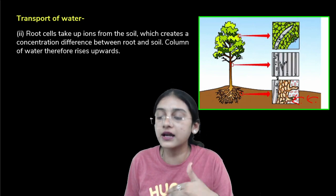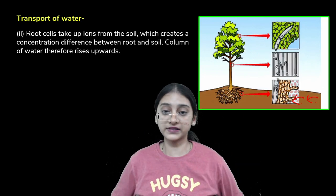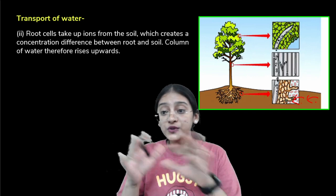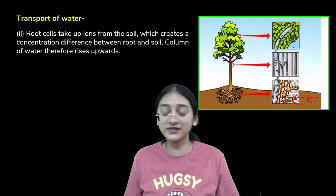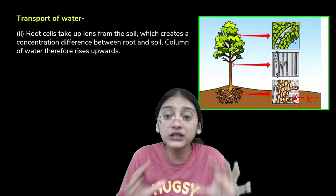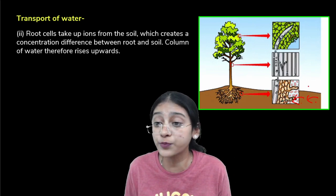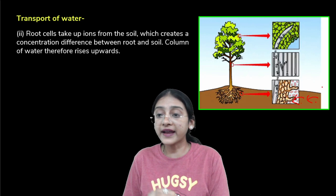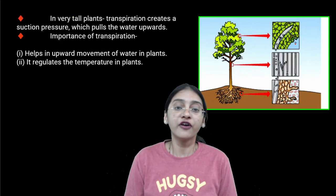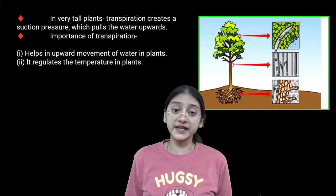As ions move up into the plants and trees, water also follows these ions. Just as eating salty food makes you feel like drinking water, the salt ions in the soil attract water — wherever ions go, water follows. This is how a column of water is created from the roots to the stem and finally to the leaves, enabling transportation of ions and water across the plant.